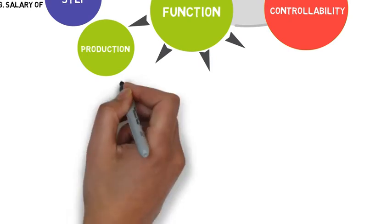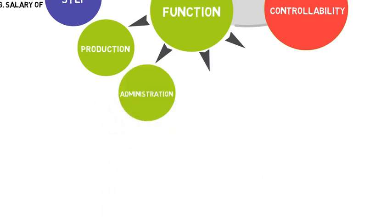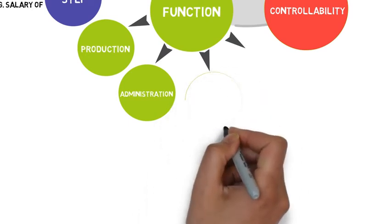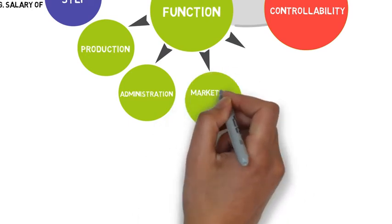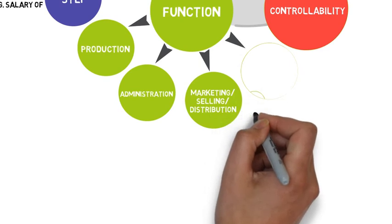Administration is a cost incurred in the general administration including directing and controlling the operations of an organization. For example, account clerk salary or stationery and printing. Marketing, such as commission to salesmen, advertisement of product, or transportation cost, can be defined as costs incurred in selling, publicizing, distributing, and product servicing.